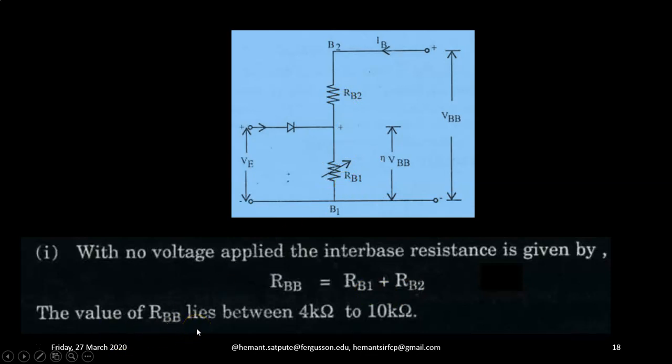The value of this interbase resistance RBB lies between 4 kilo ohm to 10 kilo ohm. Typically in our lab, we are using a UJT unijunction transistor 2N2646 whose interbase resistance is somewhere around 5.6 kilo ohm.